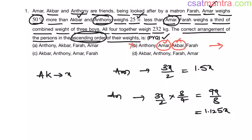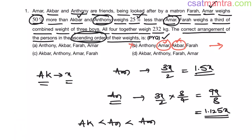Arranging in ascending order: Akbar = x (1x), Anthony = 1.125x, Ammar = 1.5x (since 3/2 = 1.5). So Akbar is least, then Anthony, then Ammar. Option A is eliminated because it places Anthony's weight less than Akbar's, which contradicts our calculation. Options C and D both show Akbar less than Anthony less than Ammar, so we need to find Farah's weight to decide.